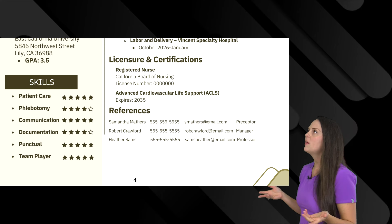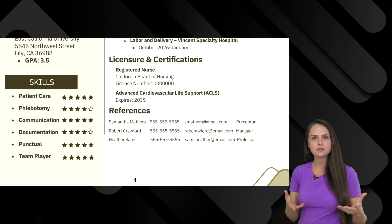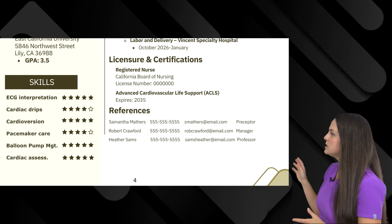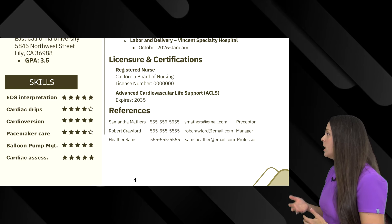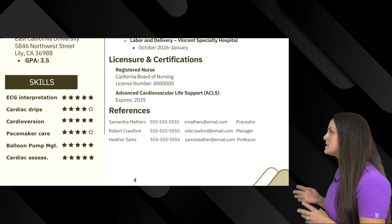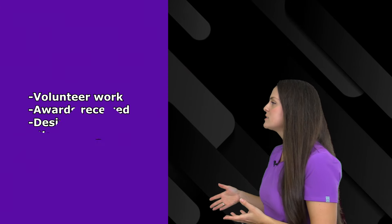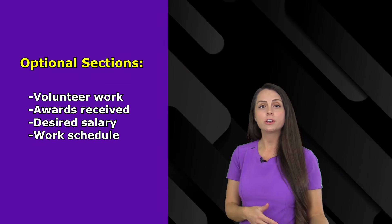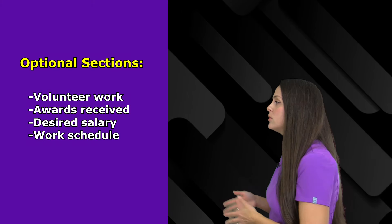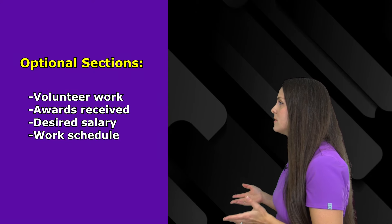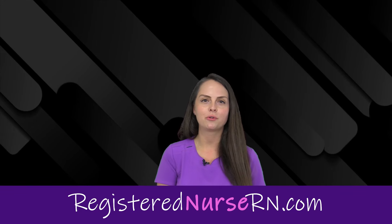For example, if you're applying for a job as a cardiac nurse, some skills you could put are ECG interpretation, cardiac drips, administering cardioversions, pacemaker care, balloon pump management, and cardiac assessments — things that really highlight you for that position. Lastly, other optional sections you can include are volunteer work you've completed, any awards you've received, and some people even like to include their desired salary or work schedule. That wraps up this video, and I hope those tips help you with creating your resume.